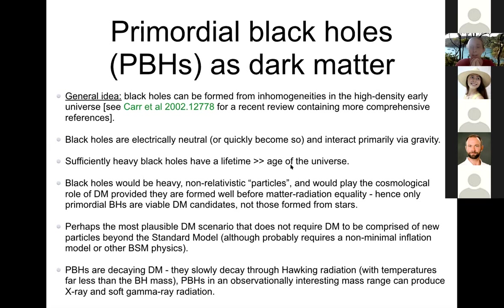Primordial black holes as dark matter - the general idea is that if you form primordial black holes early enough, they can serve as a good dark matter candidate. They could be formed from inhomogeneities in the high density early universe as a result of some non-trivial dynamics during inflation. If they are formed - which is very much an if, we do not know if primordial black holes are formed in large abundance early in the universe's history - they're electrically neutral or quickly become so. Their interactions are primarily gravitational, they are potentially extremely heavy and non-relativistic particles, and thus can play the cosmological role of cold dark matter.